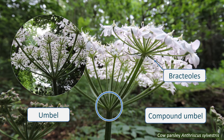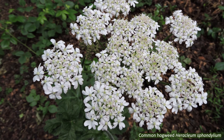Whether they have bracts or not is an important identification character. The individual flowers in these umbels are small and normally regular in shape, which means symmetrical in more than one plane, although the flowers on the outside of the umbels sometimes have larger petals on their outer edges. Flowers have five petals, with the sepals either much reduced or absent altogether.